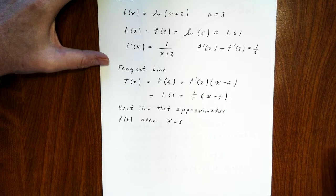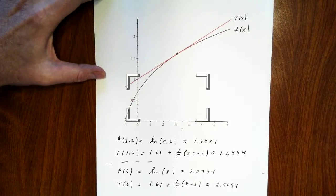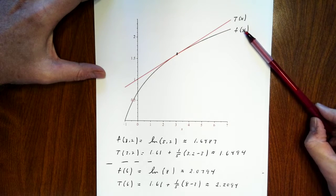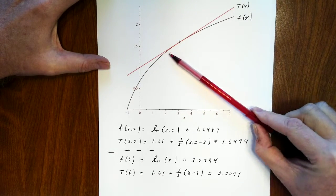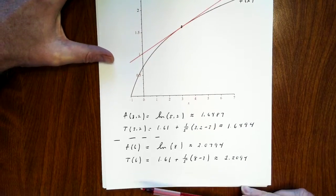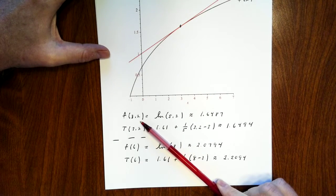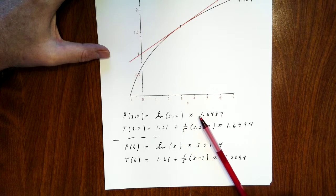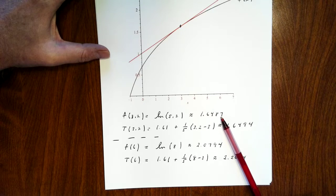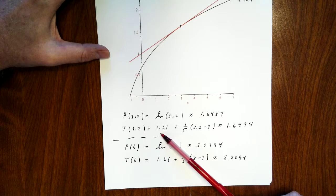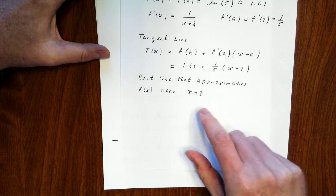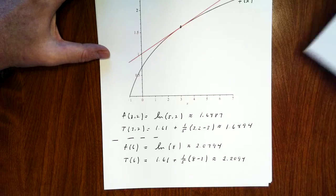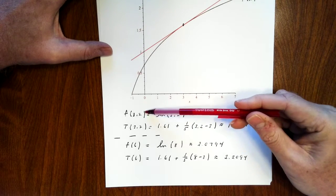The tangent line is the best line that approximates f near x equals 3. Here's a graph — the tangent line is red and f(x) is in black. I can use the tangent line to approximate the function near x equals 3 because the graphs are so close to one another. For example, f(3.2) equals ln(5.2), which works out to about 1.6487. If I plug 3.2 into the tangent line, I get 1.61 plus 1/5 times (3.2 minus 3), which is about 1.6494. So f is well approximated by the tangent line when inputs are close to 3.